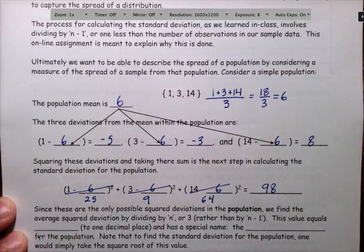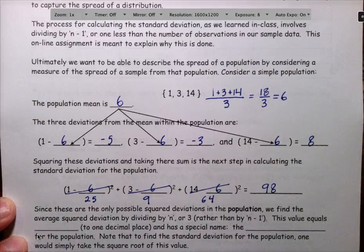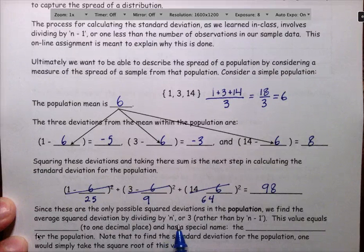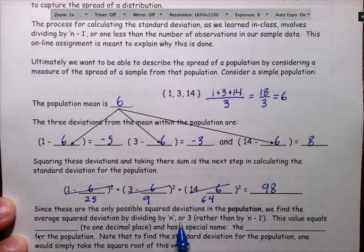Now these are the only possible squared deviations in the population. Because this is special, because we know everything in the population, we are not going to divide by n minus 1. We're not going to divide by 1 less than the number of deviations. We will not divide by 2.